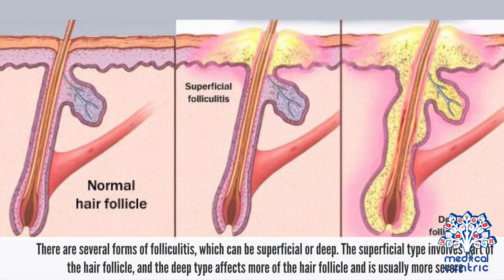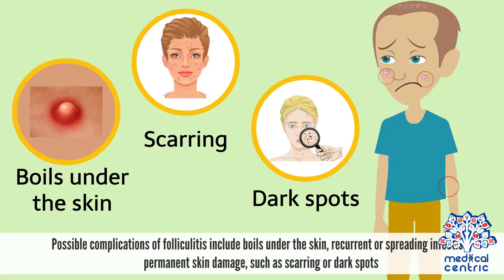There are several forms of folliculitis, which can be superficial or deep. The superficial type involves part of the hair follicle, and the deep type affects more of the hair follicle and is usually more severe. Possible complications of folliculitis include boils under the skin, recurrent or spreading infection, and permanent skin damage such as scarring or dark spots.